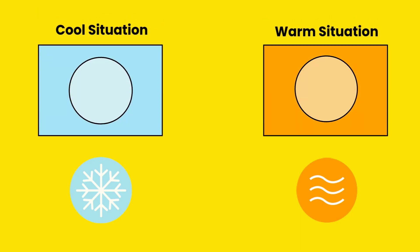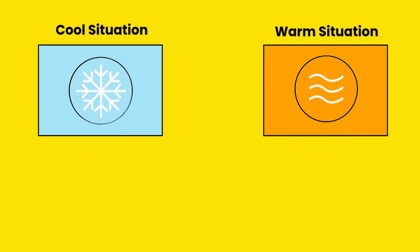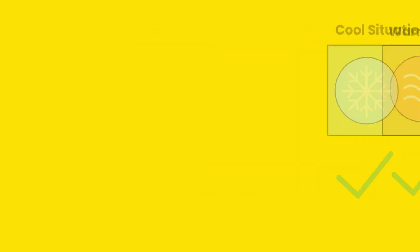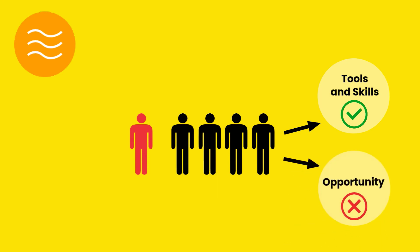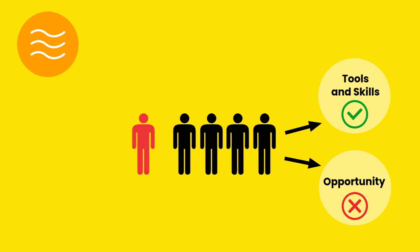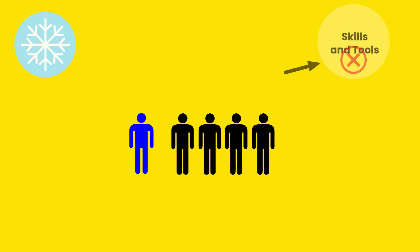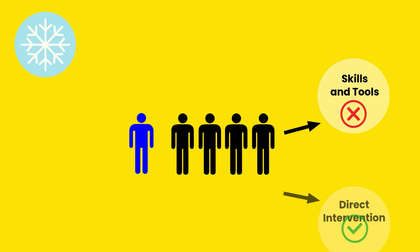Knowing when to use the warm or cool variant of an influencing strategy is important, as each will be effective in different situations. Warm supportive influencing is powerful in contexts where those around you already have the tools and skills required to solve a problem, but simply lack the opportunity to put them into practice. Cool supportive influencing is necessary when others lack the skills or tools to solve the problem and require direct intervention.